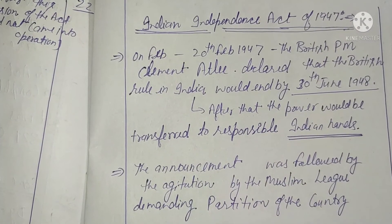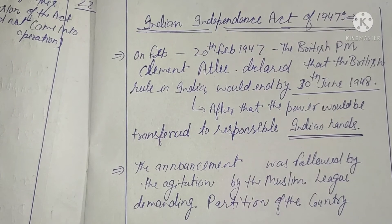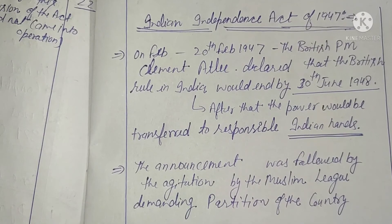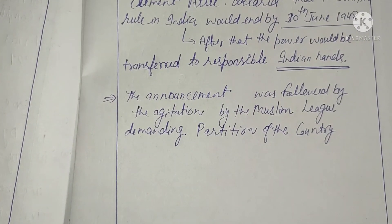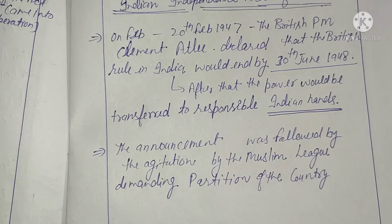On 20 February 1947, British Prime Minister Clement Attlee declared that British rule in India would end by 30 June 1948, and power would be transferred to responsible Indian hands. This announcement was followed by agitation from the Muslim League demanding partition of the country. When Attlee declared that India would be free by 1948, Jinnah and the Muslim League demanded a separate country — leading to the partition.